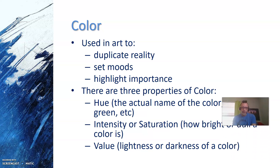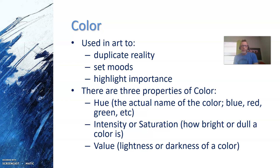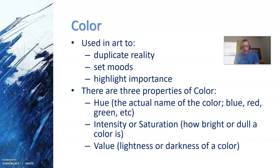Color is used in art to duplicate reality, set moods, and highlight importance. There are three different properties of color. The first is hue, which is the actual name of the color — blue, red, green, yellow, orange, brown, etc. The second is intensity, also known as saturation, or how bright or dull a color is. And the last is value — the lightness or darkness of a color.